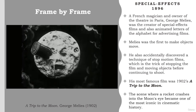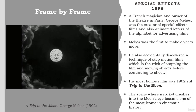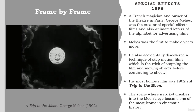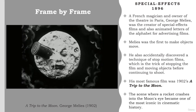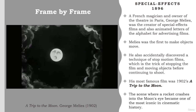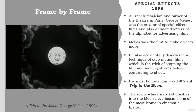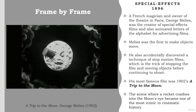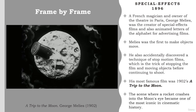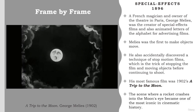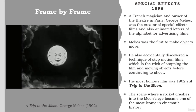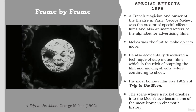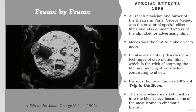Méliès was the first to make objects move. He also accidentally discovered a technique of stop motion films — stopping the film and moving objects before continuing to shoot — when his camera jammed and then restarted. His most famous film was in 1902, Le Voyage dans la Lune (A Trip to the Moon), which has the scene in which a rocket crashes into the moon's eye. This image would go on to become one of the most iconic images in cinematic history. Although he made hundreds of films, he was left behind by the bigger film companies. Like fellow Reynaud before him, he started to destroy his films. Only during the last part of his life was he rediscovered by the French surrealist movement and received the recognition he deserved as one of the pioneers of cinema.